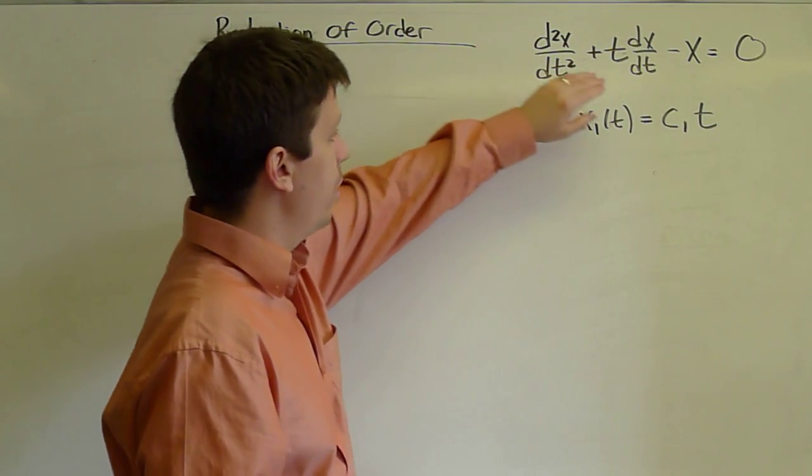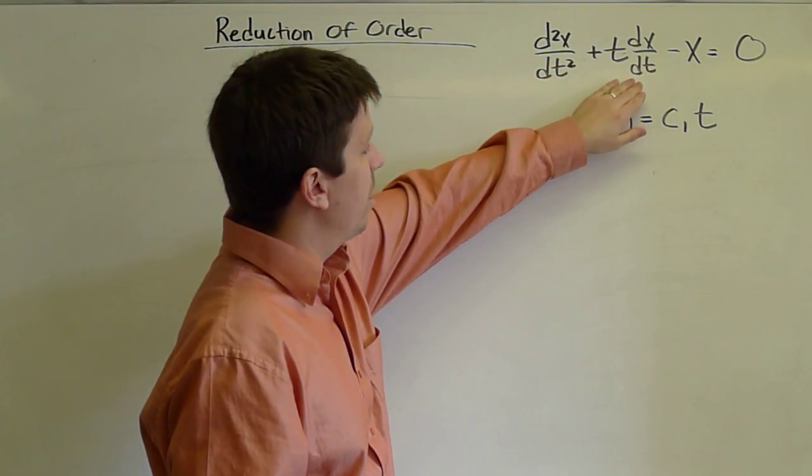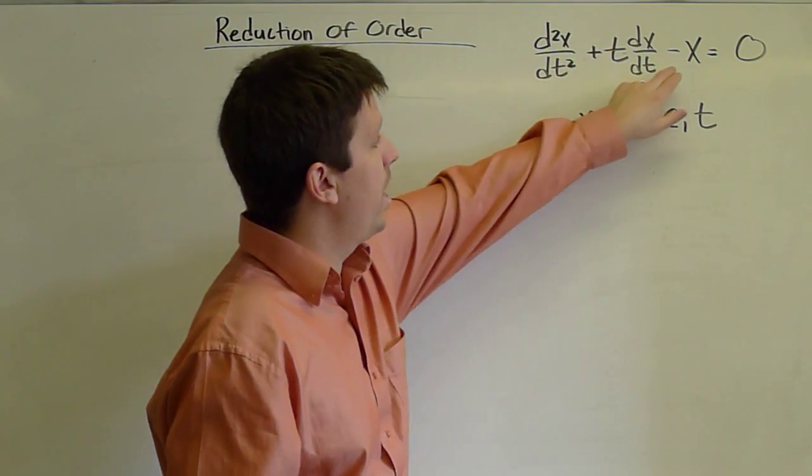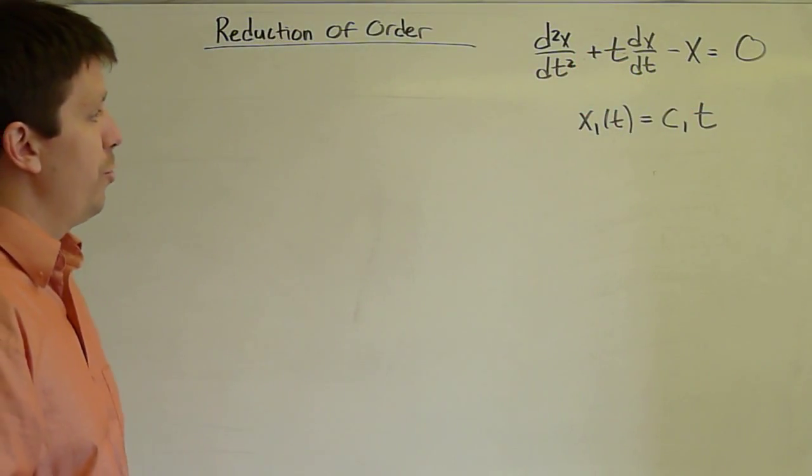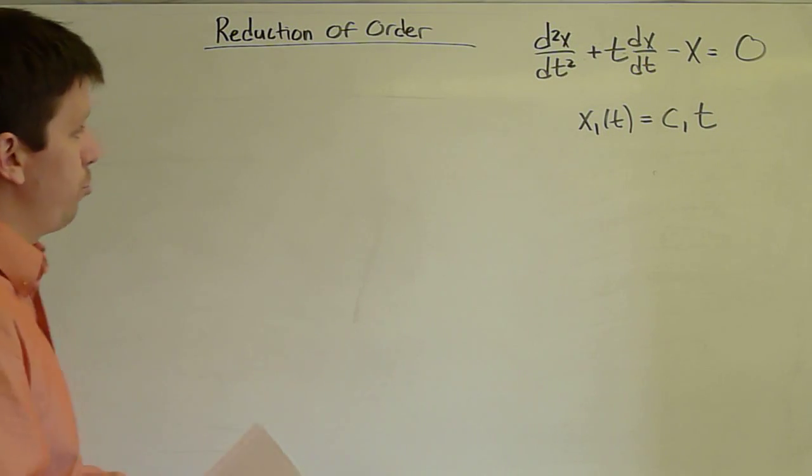The second derivative of t is zero. The first derivative of t is a constant. This gives us a t therefore. And then minus t will give us zero no matter the value of c1 for this problem.